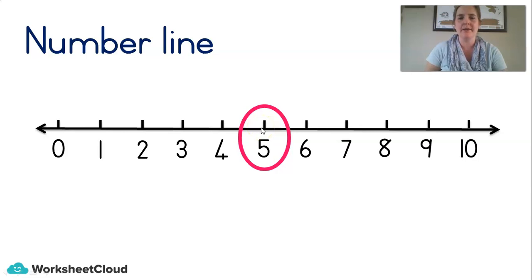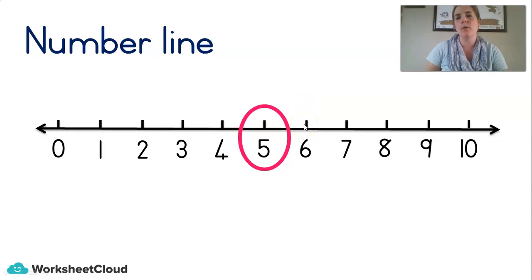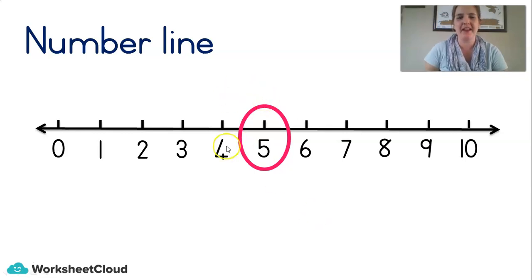What comes before five? Four. What comes after five? Six. What number is between four and six? Five, of course! There it is — number five.